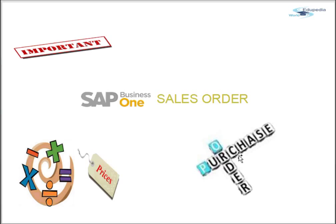One unique feature of SAP Business One is that you can create a purchase order directly from your sales order, thereby streamlining your supply chain as well as material requirement planning processes. For example, if you received an order from one of your customers and the ordered goods are not in stock, you want to create a purchase order directly from the sales order.